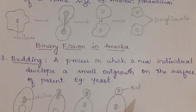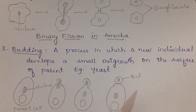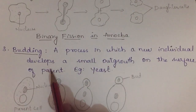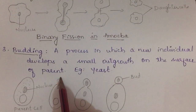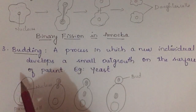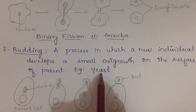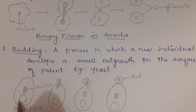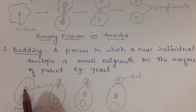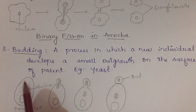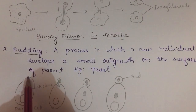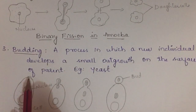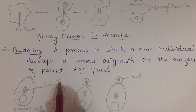The third type is budding: a process in which a new individual develops from a small outgrowth on the surface of the parent. The example is yeast, which is a unicellular organism. The parental yeast cell slowly starts to form a small outgrowth on its surface.